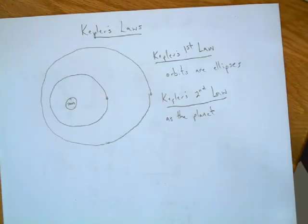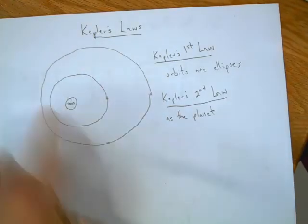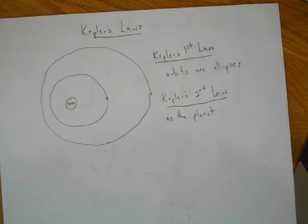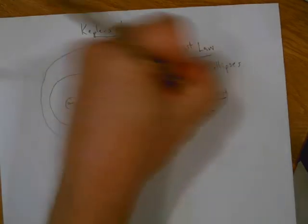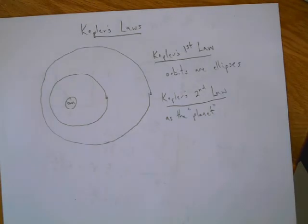Now when I say planet, it really is whatever is orbiting this thing. It doesn't have to be a planet. It could be a comet, it could be a satellite, whatever. So I'll put planet in quotes because it really could just mean anything.